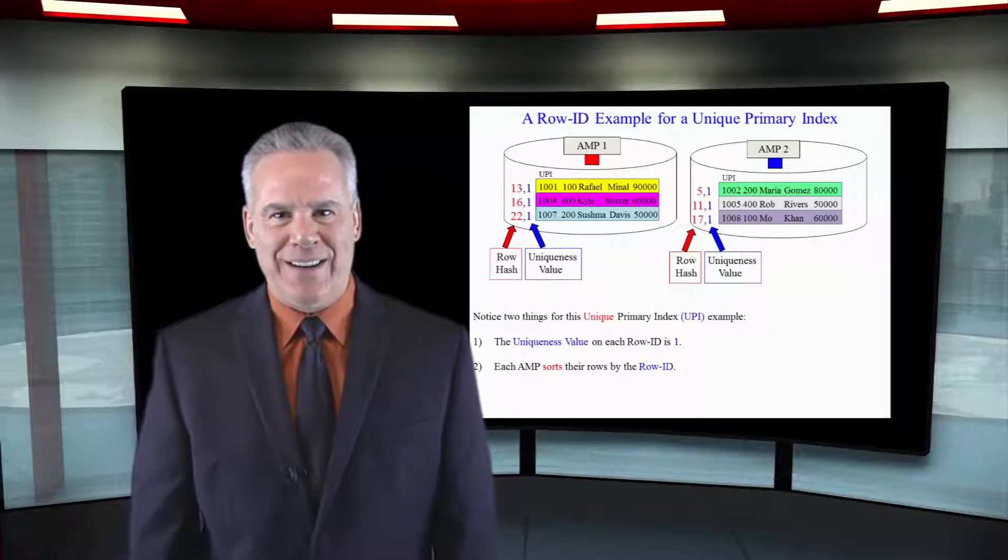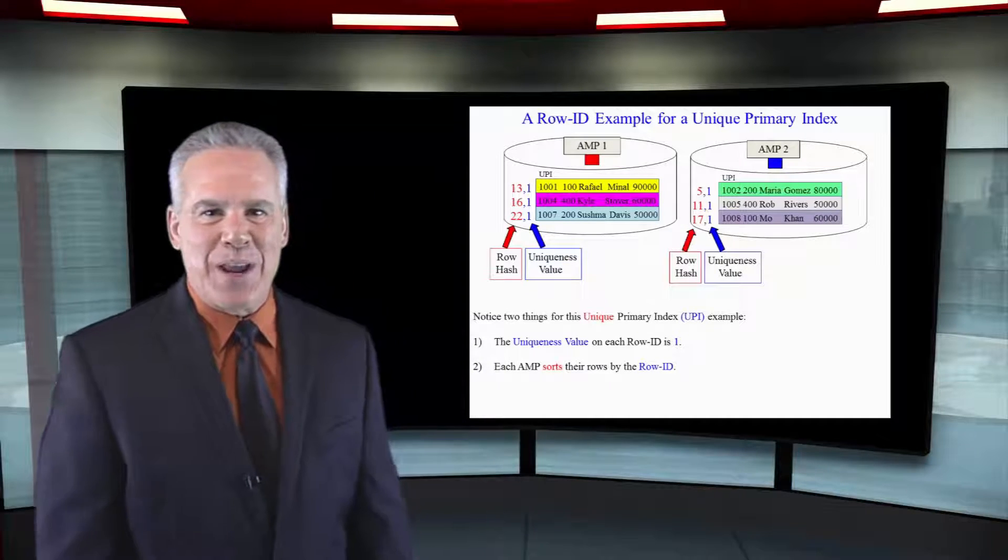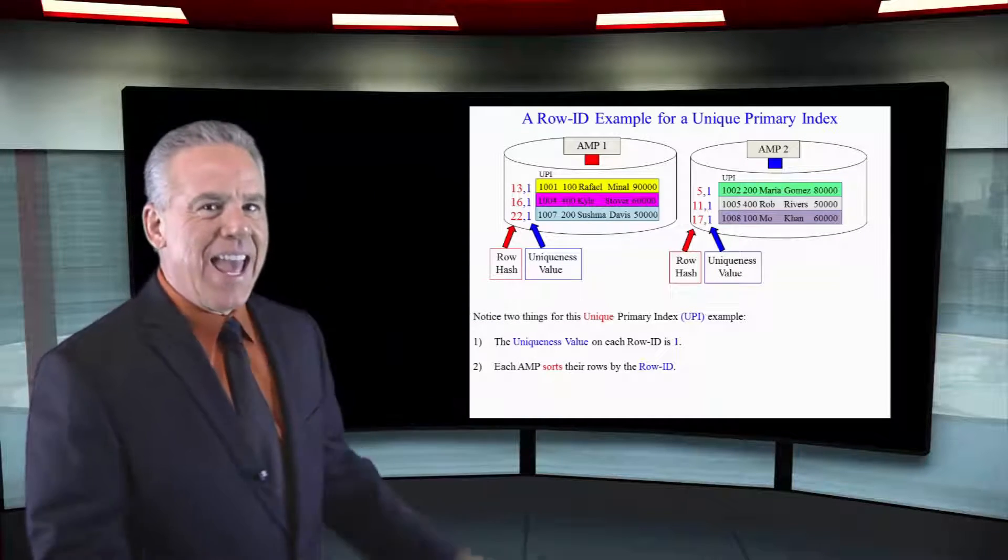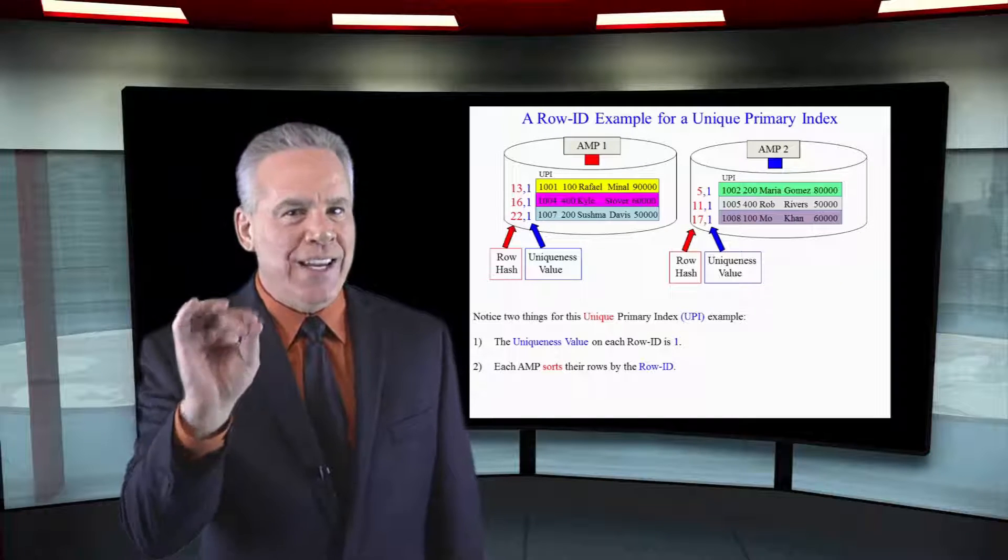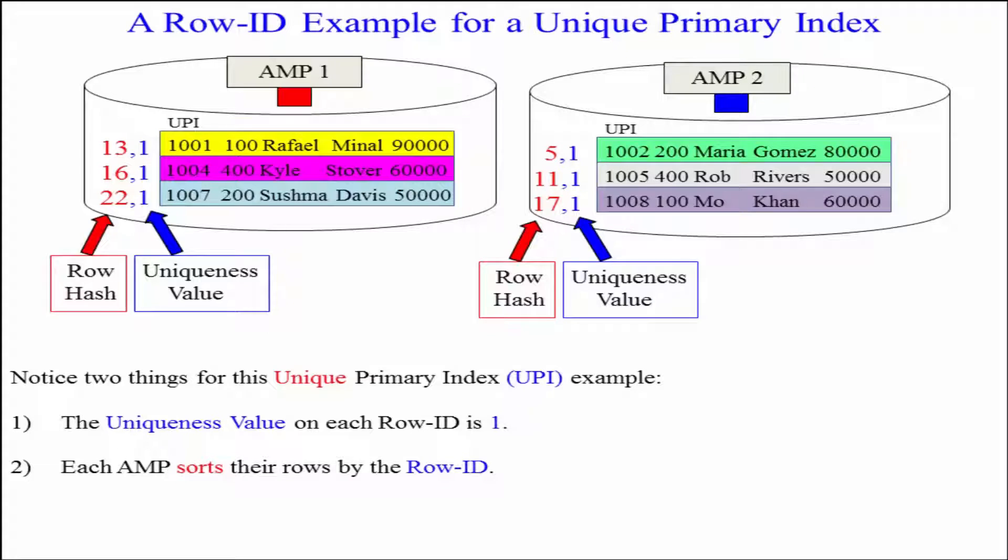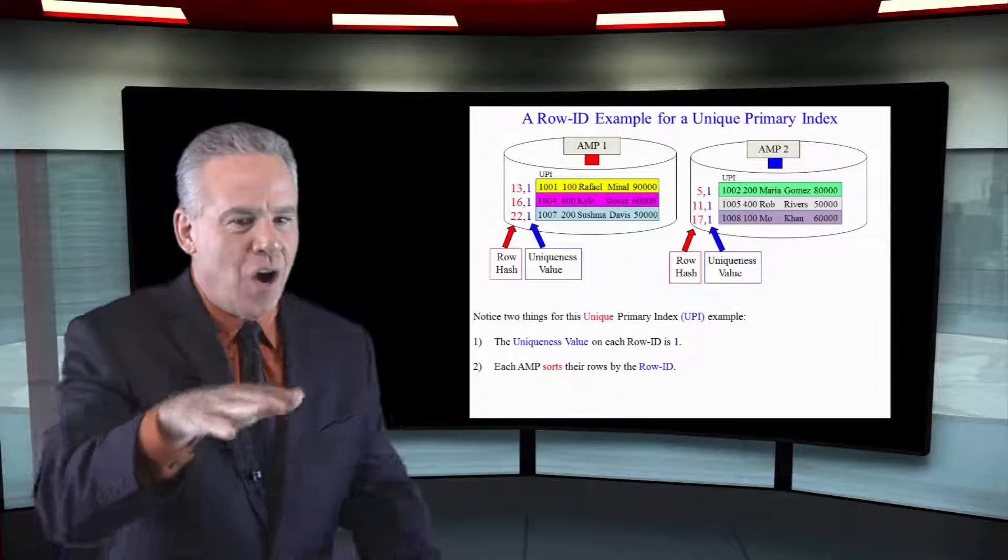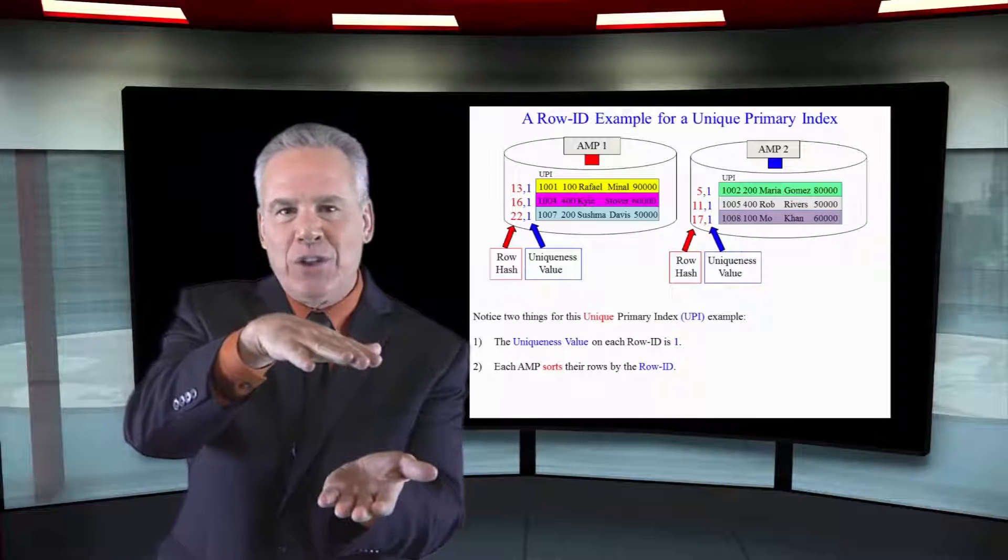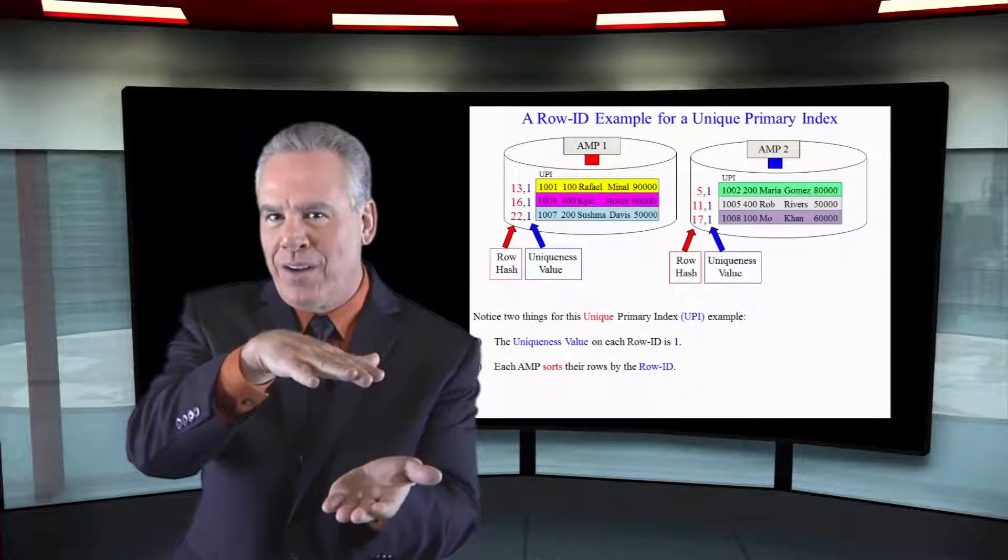Here we have a unique primary index example. The data is spread perfectly evenly and notice the uniqueness value of each row ID is set to 1. What I want you to understand is that each AMP is going to sort their rows in their table by the row ID, thus almost making data look up like a phone book.